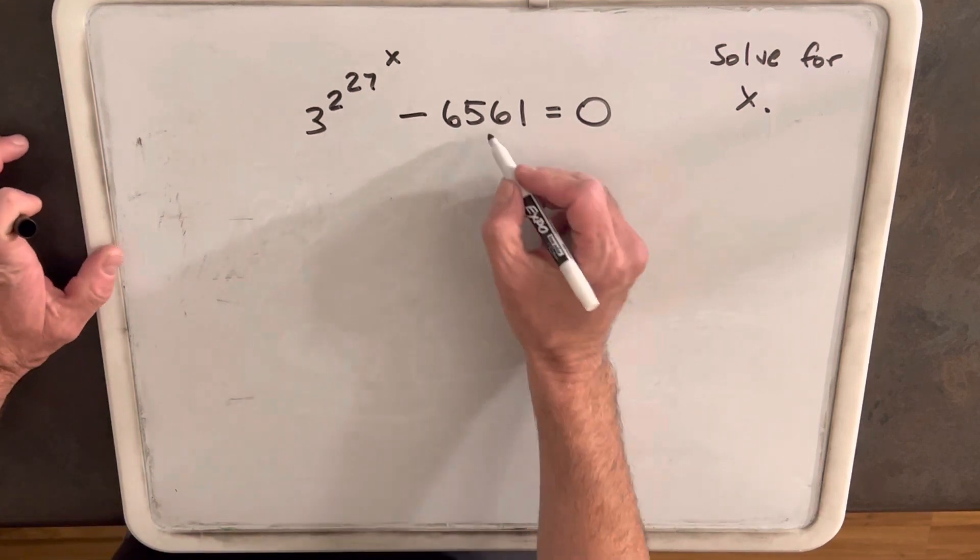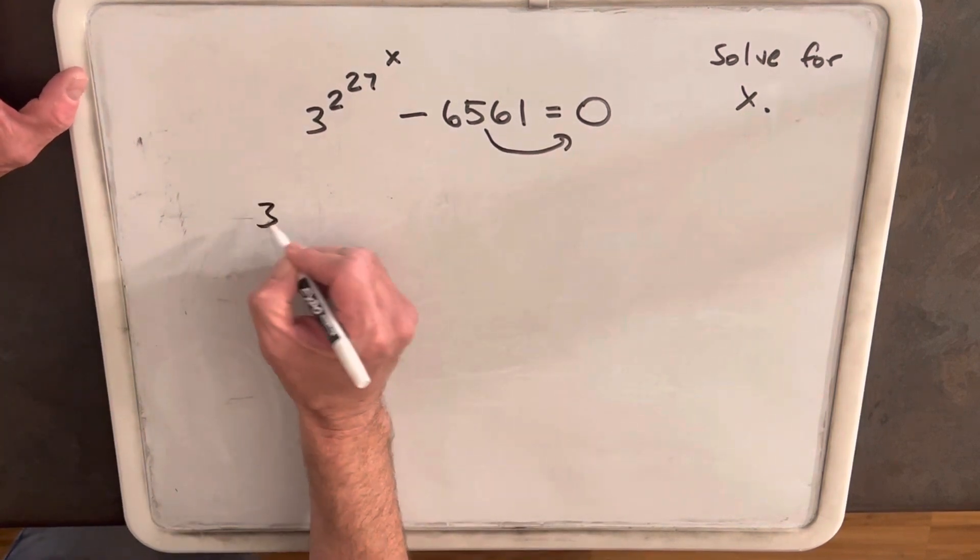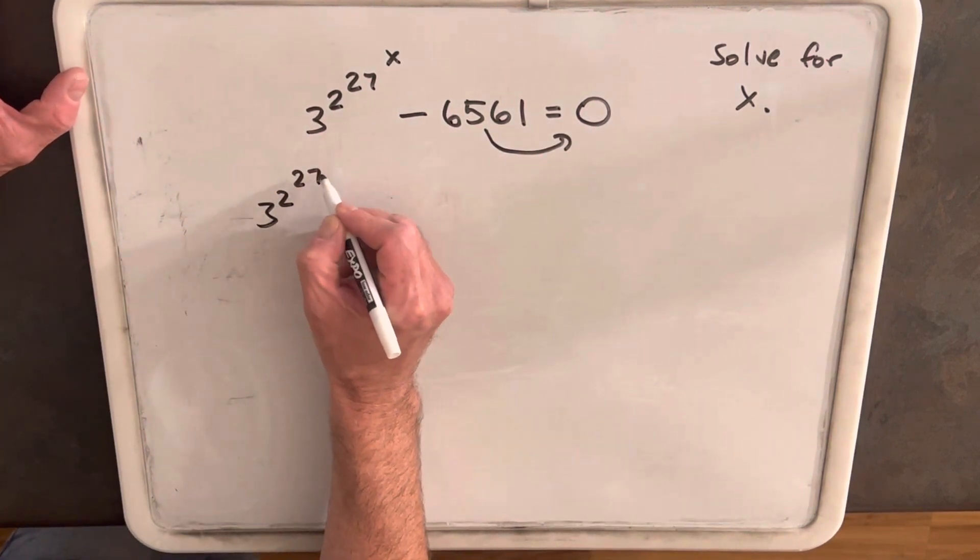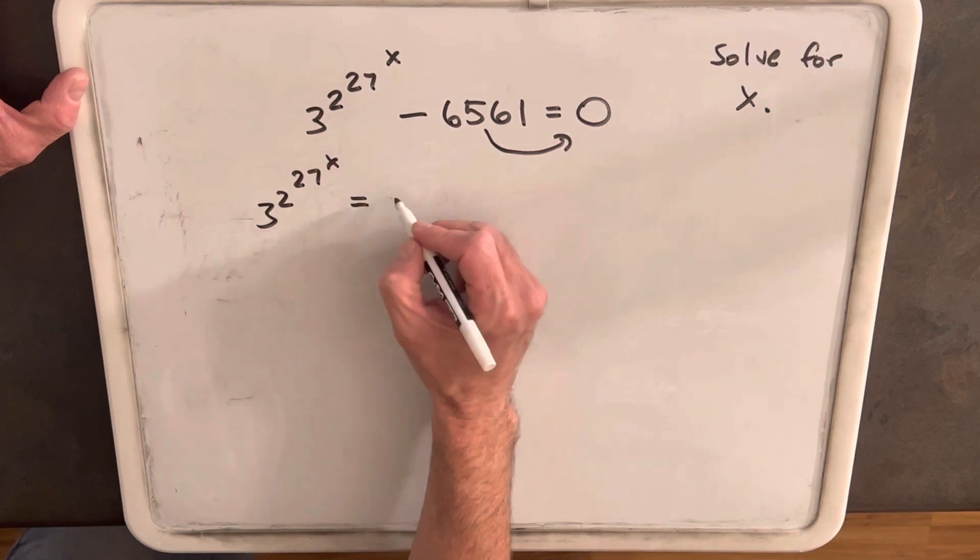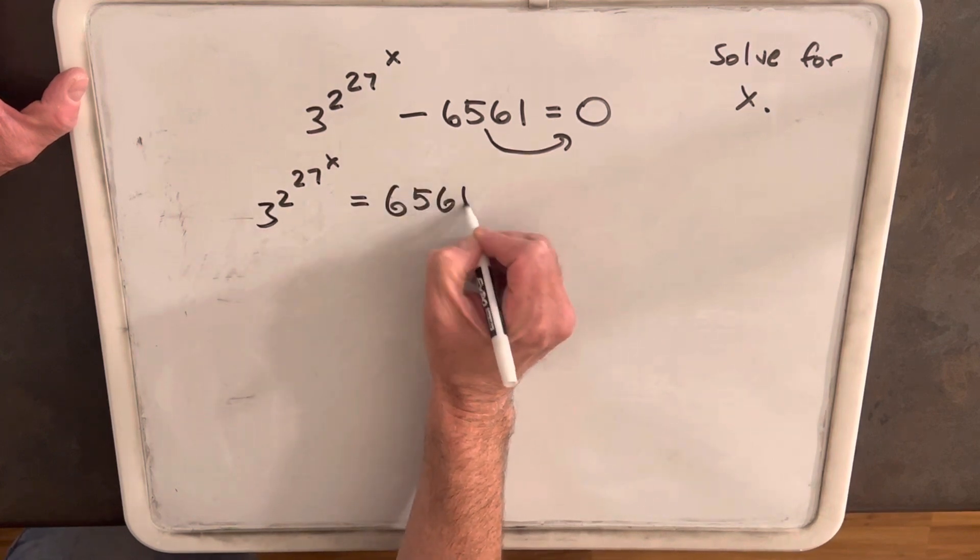To start with, I want this 6561 on the other side, so let's just rewrite this. 3 to the 2 to the 27 to the x equals 6561.